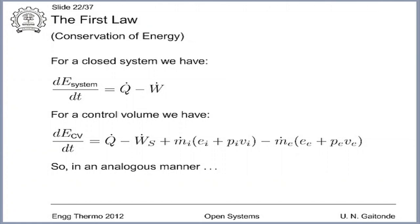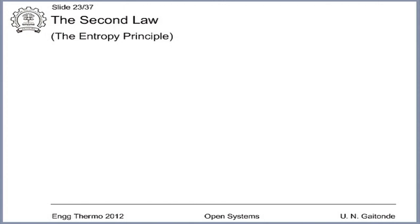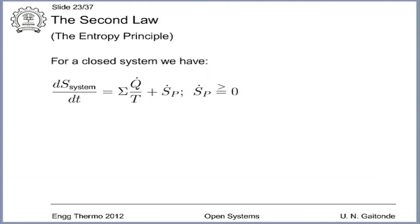So if we do this in an analogous manner, what shall we get for the second law? The second law, quite often known as the entropy principle for a closed system, I have written in terms of the entropy generation term S dot P. That means I have taken the equation delta S equals dQ by T, or integral dQ by T plus S_P, differentiated in differential form. We get dS of the system by dt equals summation of Q dot by T plus S dot P.